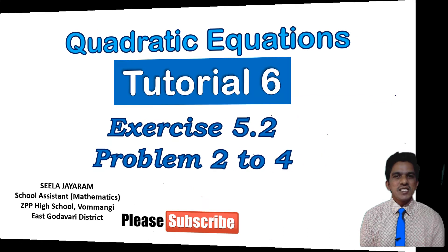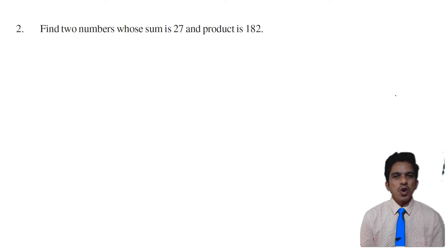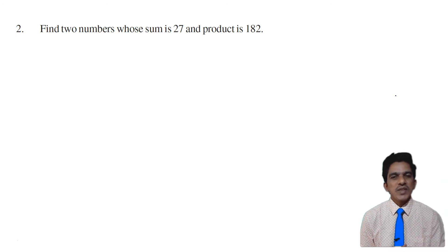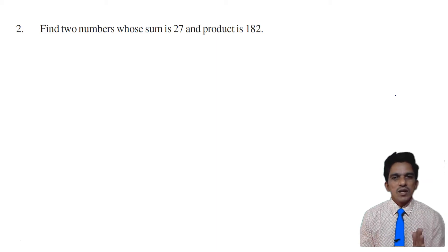This is question number 2: Find two numbers whose sum is 27 and product is 182. In this problem, we have to find two numbers such that when you add them you get 27, and when you multiply them you get 182.